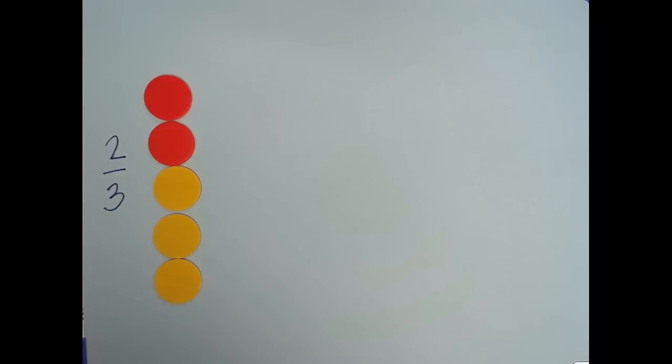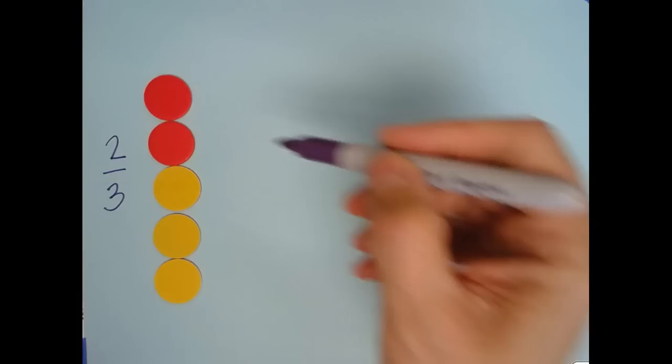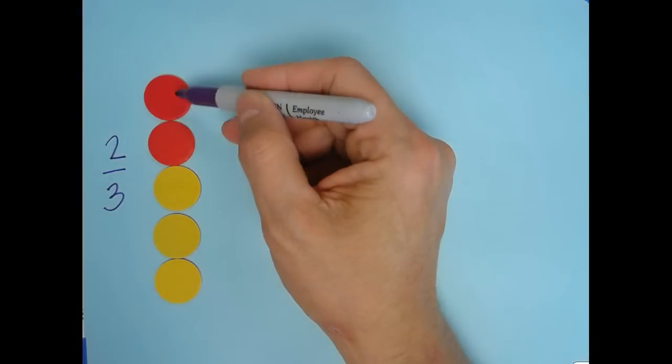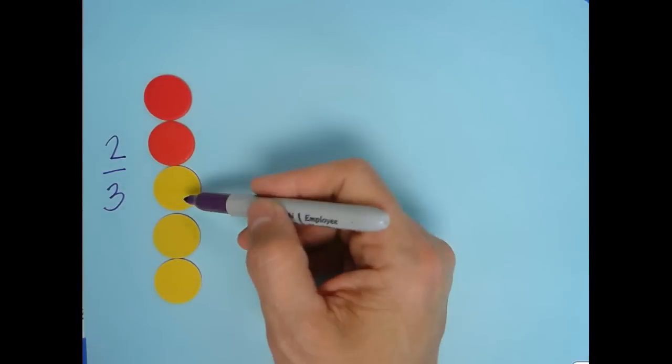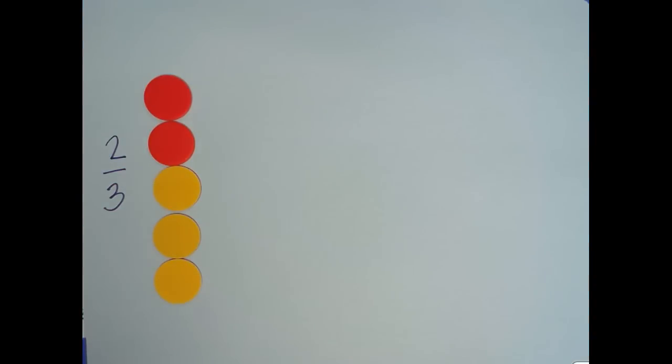In the example we have here, we see a relationship of two red chips to three yellow chips. Since that's a ratio, we're going to say that is a constant or consistent relationship.